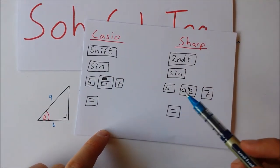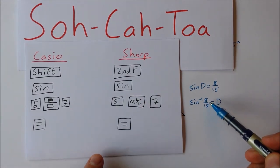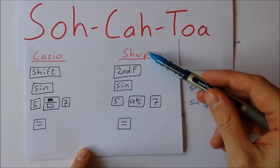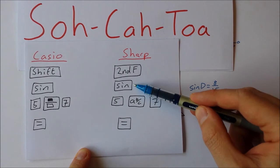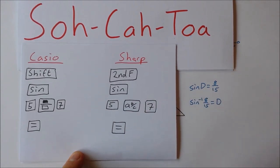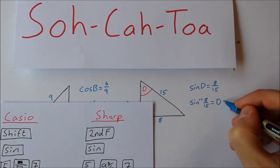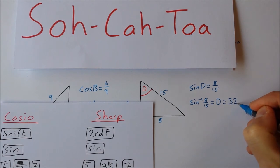Shift sine or fraction this time is 8 over 15. Or if it's a sharp calculator second function sine 8 over 15. And the answer you should get is 32.23 degrees.